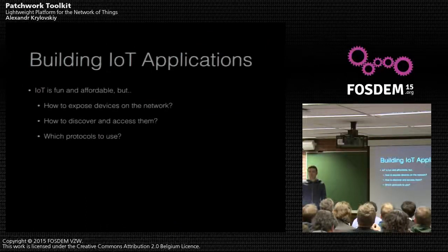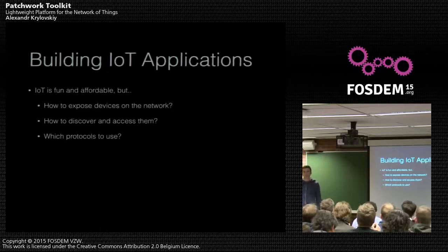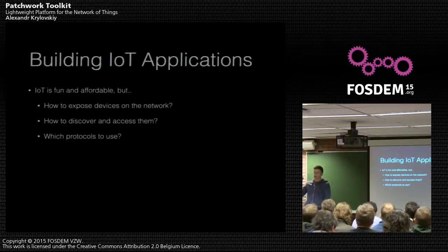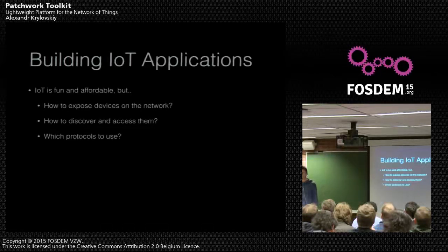IoT today is quite affordable. For around 100 euros you can get a Raspberry Pi and a bunch of DIY electronics. You can assemble it together quite easily. The problem is then when you want to build your applications - how do you communicate with your devices once you have connected them, how do you discover them, and which protocols do you use?